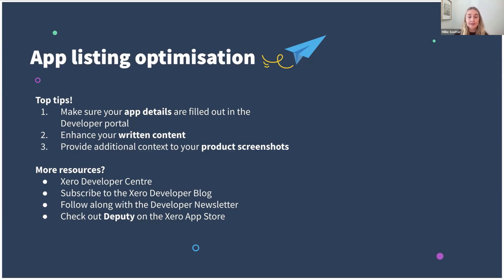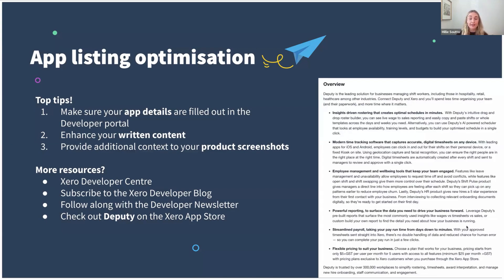If you don't have access to the developer portal, you can email api@xero.com with your name and details to get access. Number two is enhance your written content. A common issue I've noticed is the overview section and integration details section often lack sufficient detail about what your app does and how it benefits customers. Here's an example from our app partner Deputy — they've been really thorough with the information provided and the way they've formatted their text. You can use Markdown to format your text, breaking it up with numbers, bullets, and bold headings to improve readability. Remember to be strategic about keywords, and add proof points such as 'trusted by 300,000 workplaces' or 'saves X amount of admin hours' — this is a really powerful way to show the value of your app.